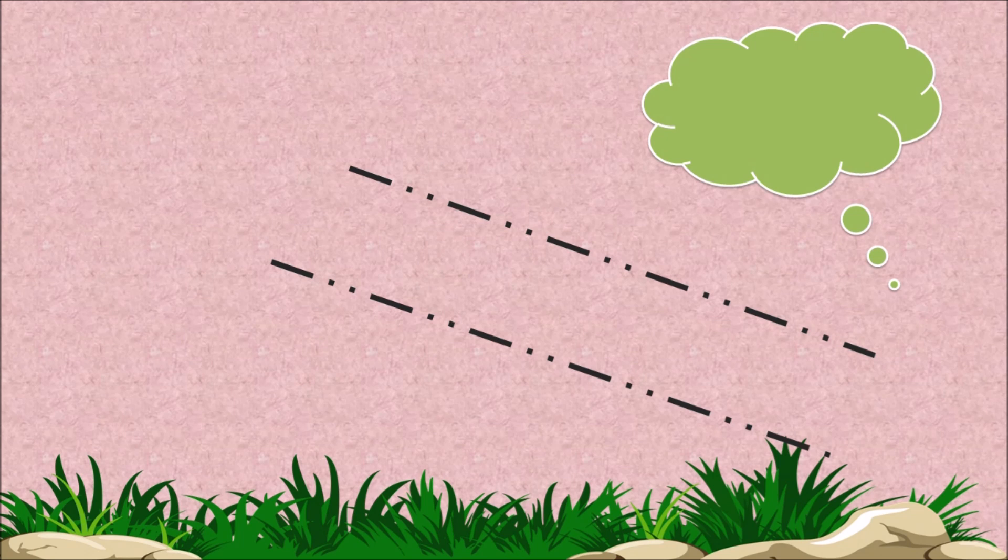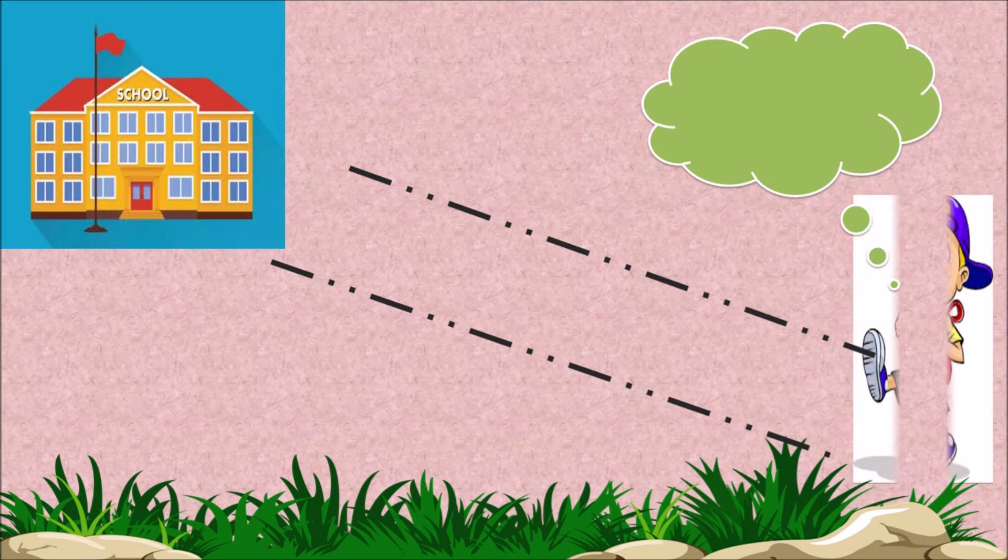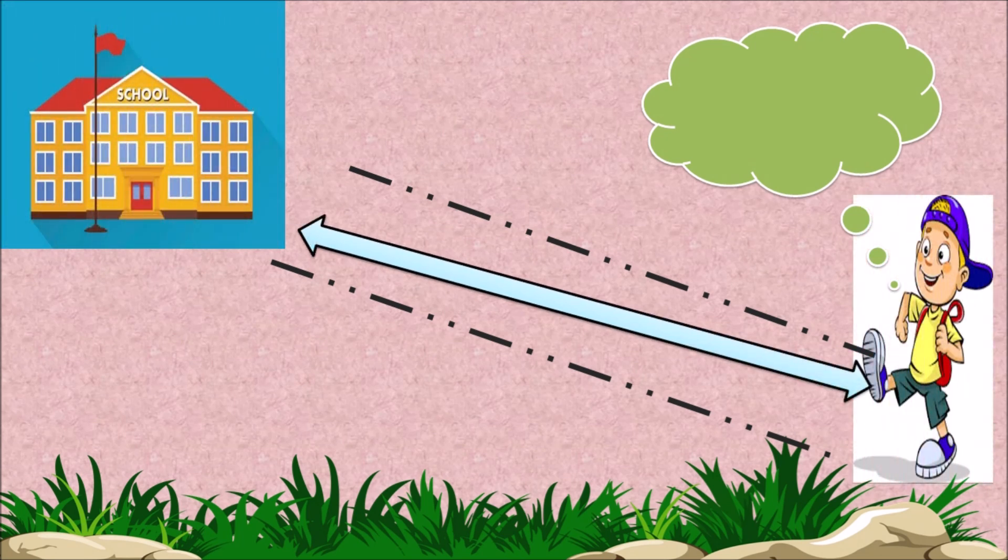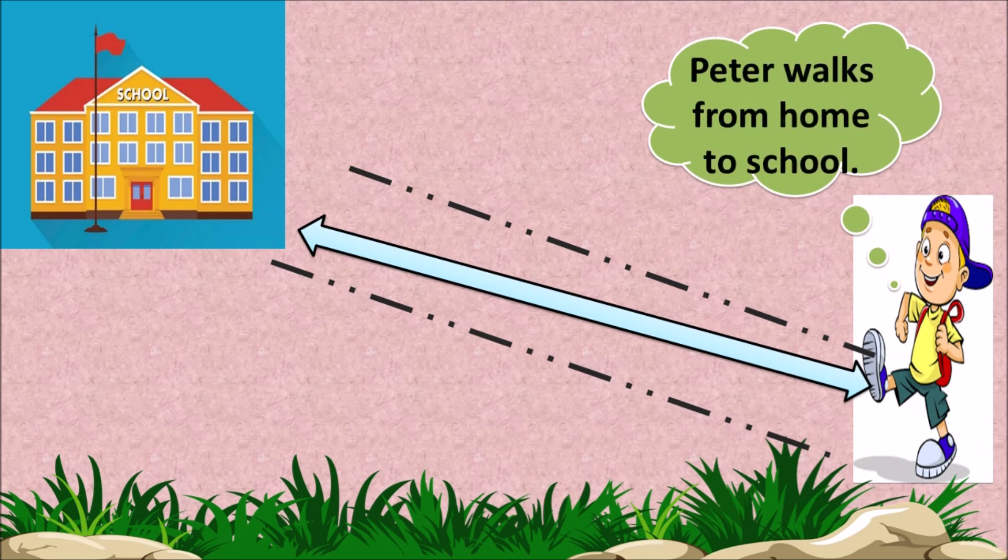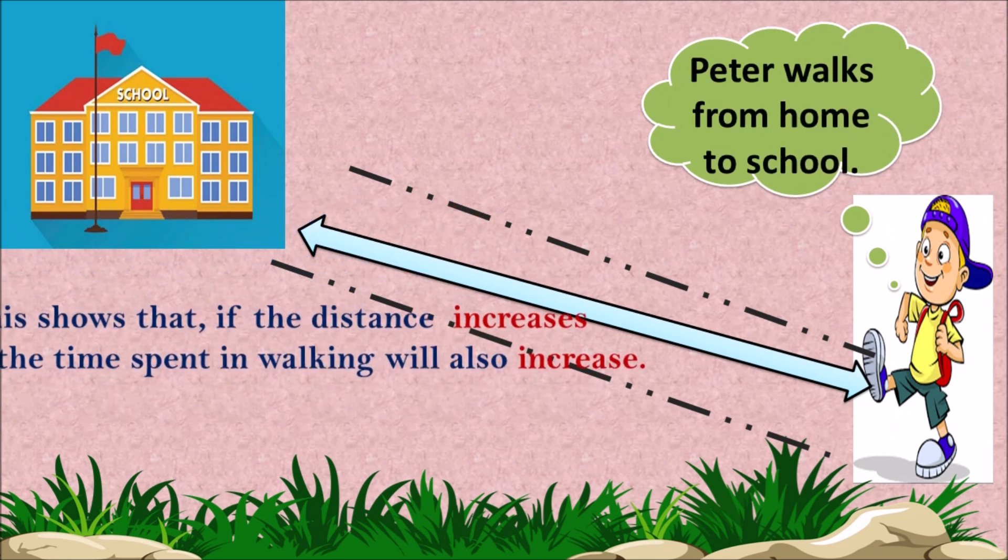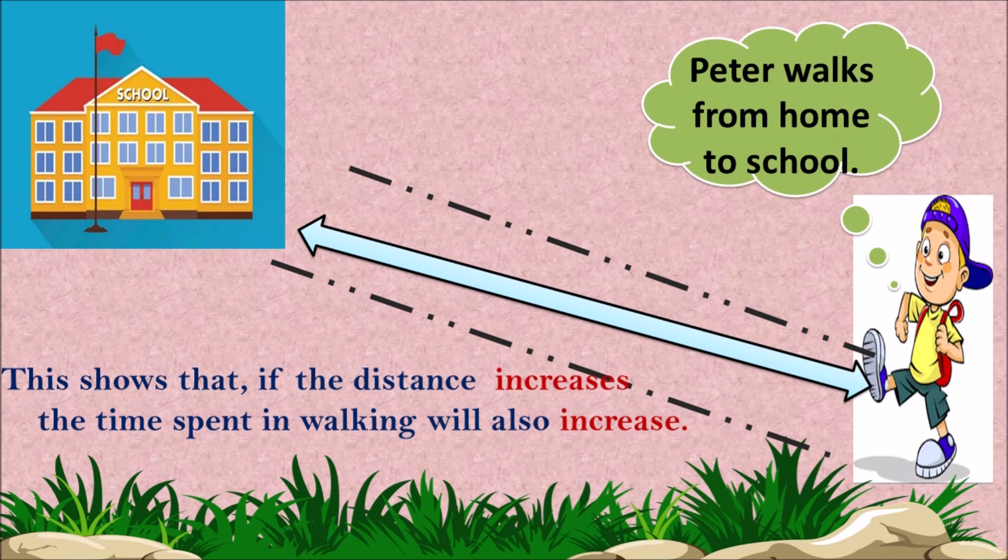Meanwhile, Peter always comes to school late. It takes a long time for him to walk from home to school. This shows that if the distance increases, the time spent in walking will also increase.